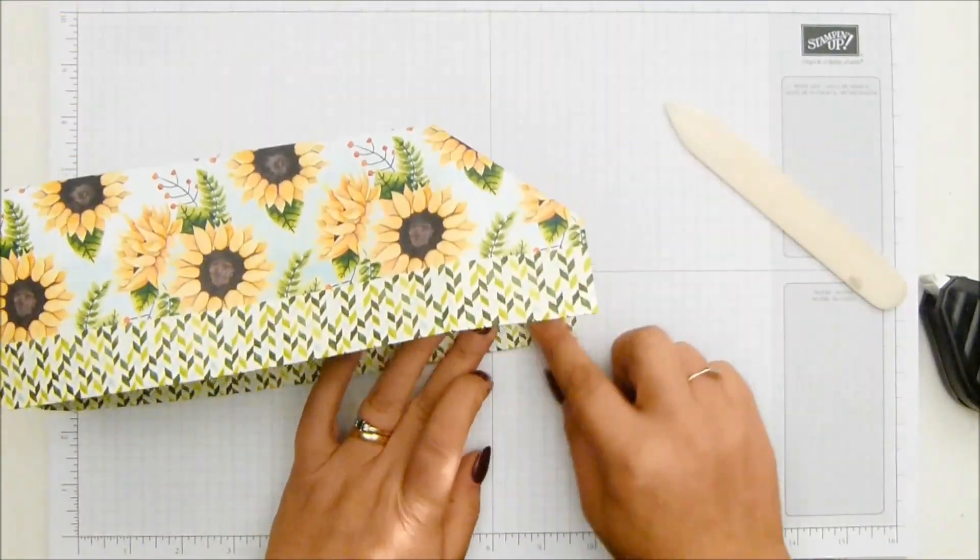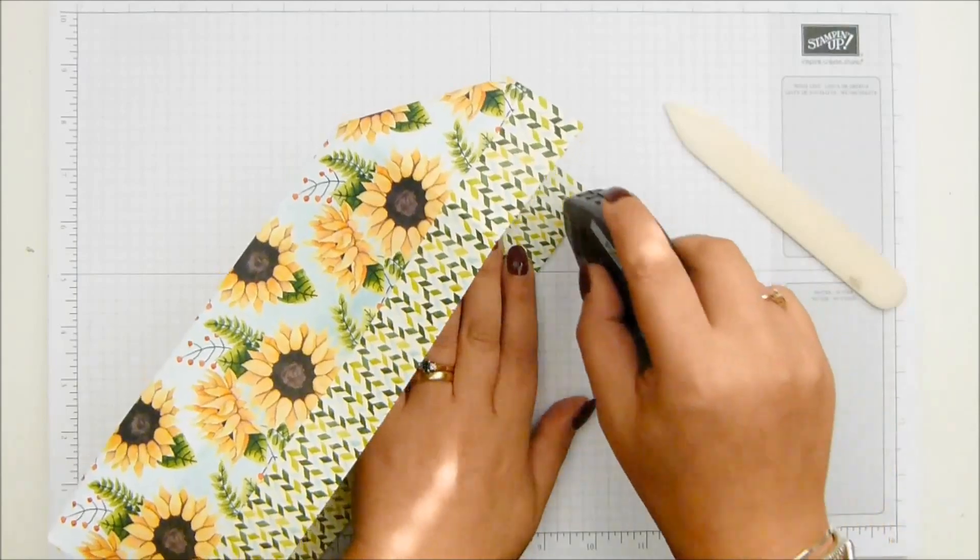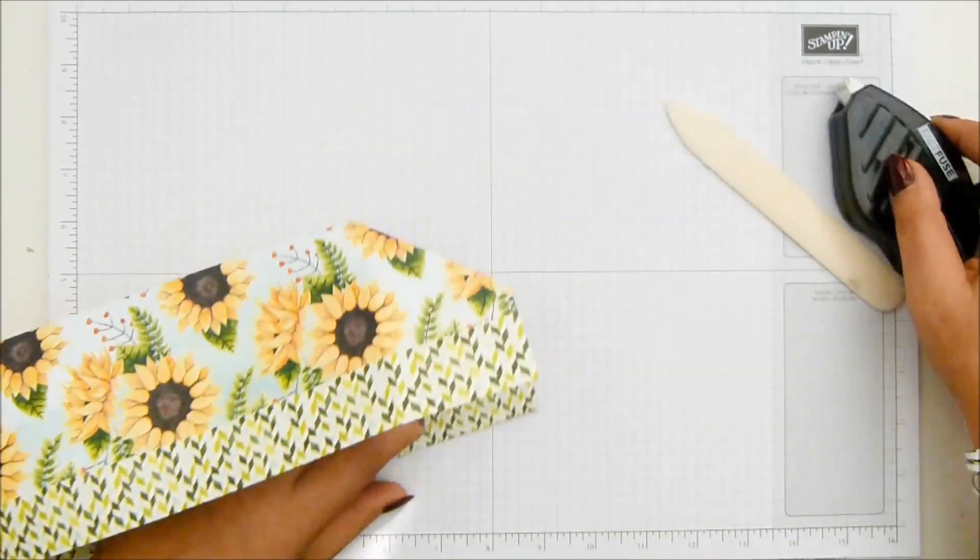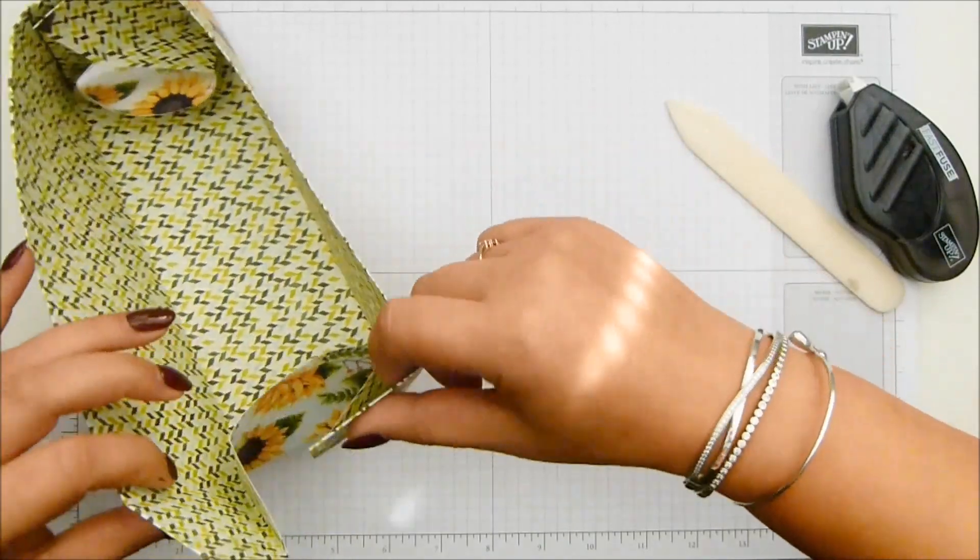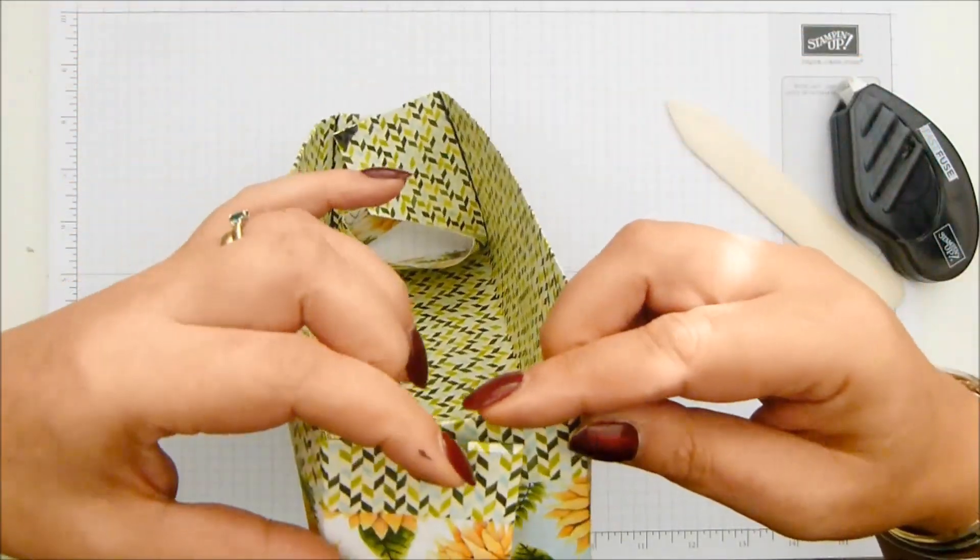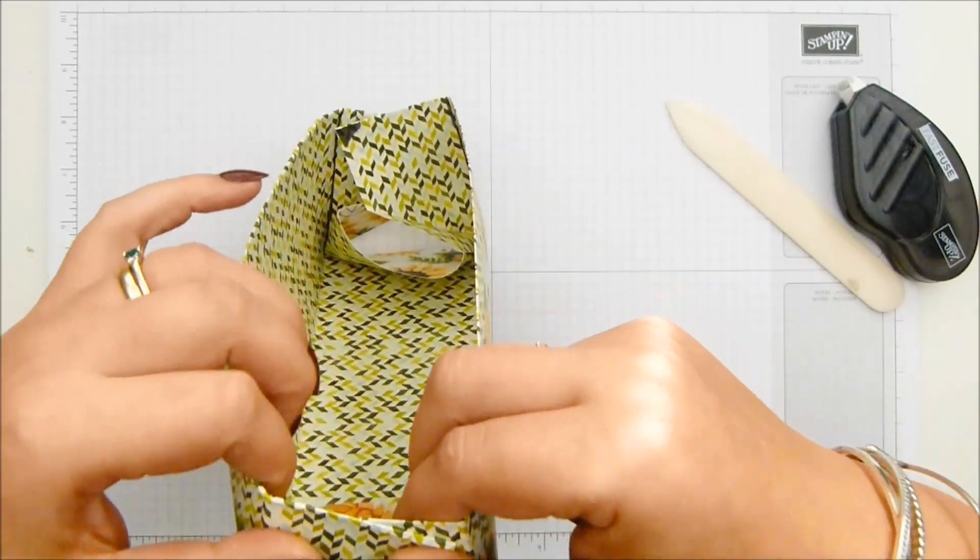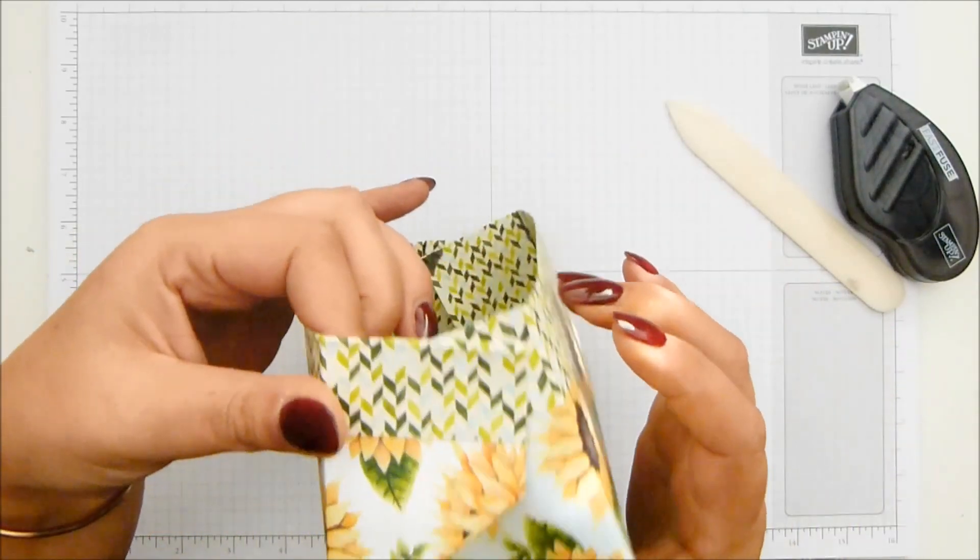So the same over here. So just, just in the corner. Not all over because you end up sticking your whole bag together and you can't open it properly. So bringing it around again and you go for that shape.